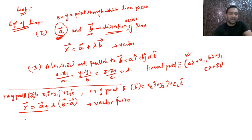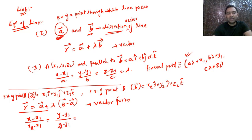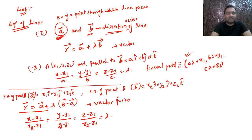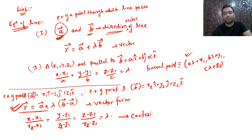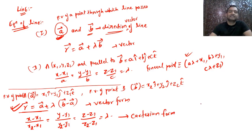In Cartesian form, the two-point form of the line's equation is: (x − x₁)/(x₂ − x₁) = (y − y₁)/(y₂ − y₁) = (z − z₁)/(z₂ − z₁) = λ. You can also take the position vectors **a** and **b** directly for the vector form, and use this Cartesian form accordingly.